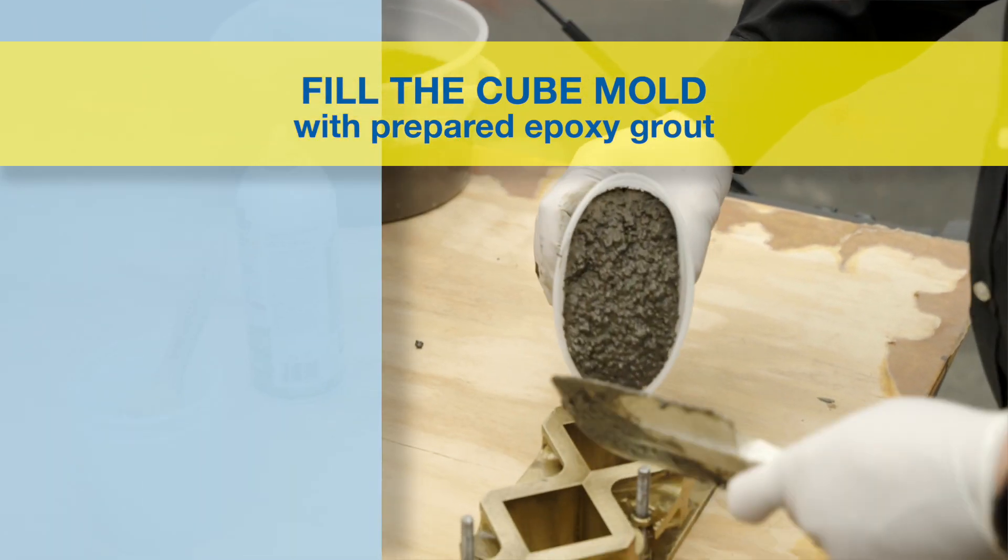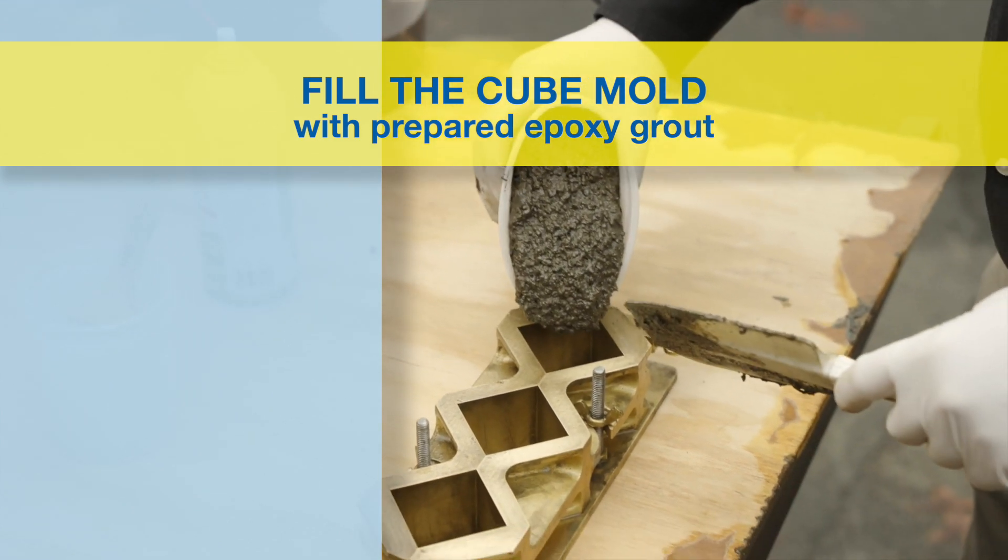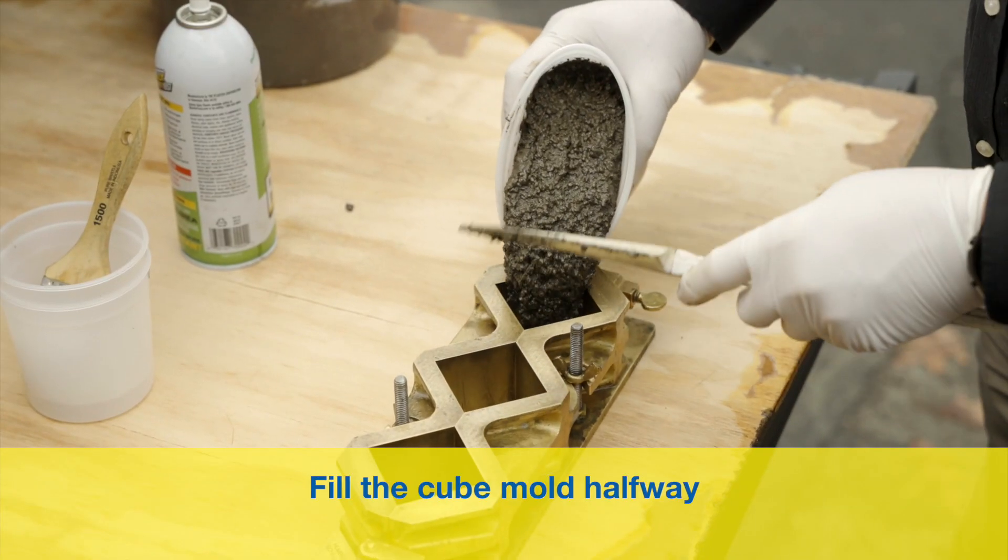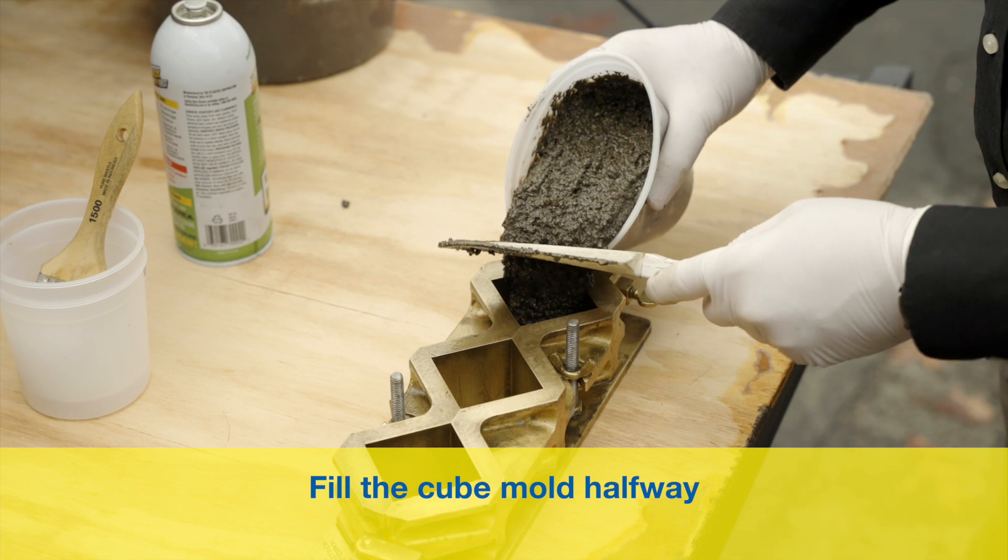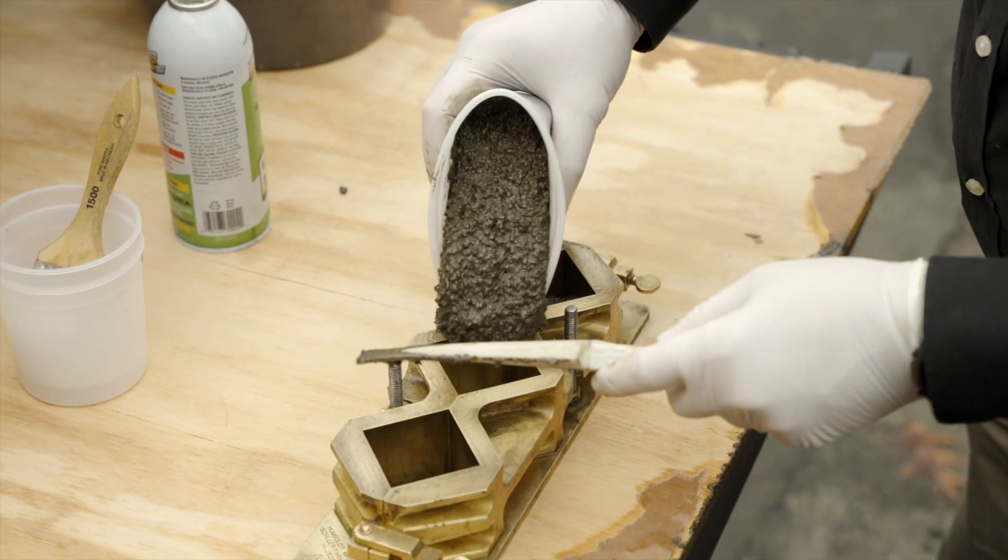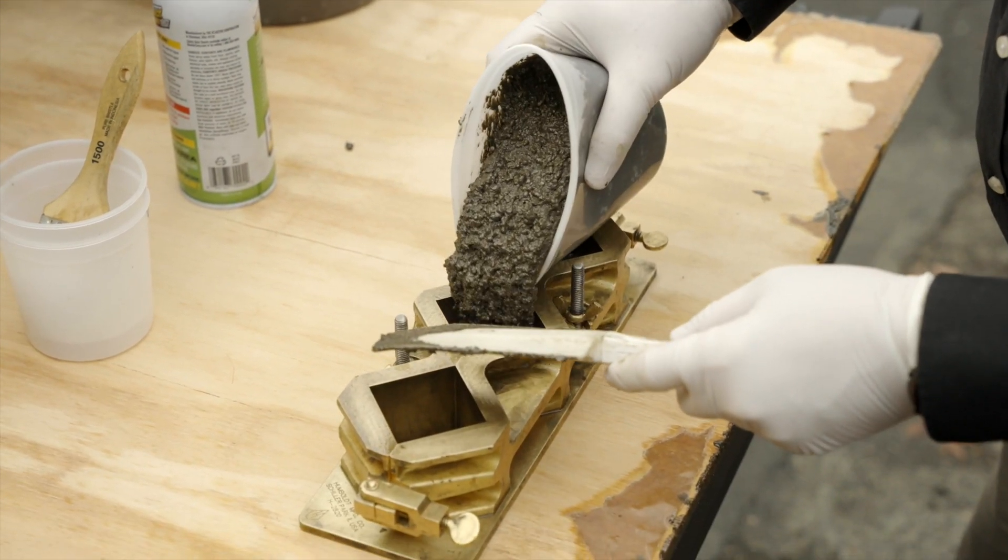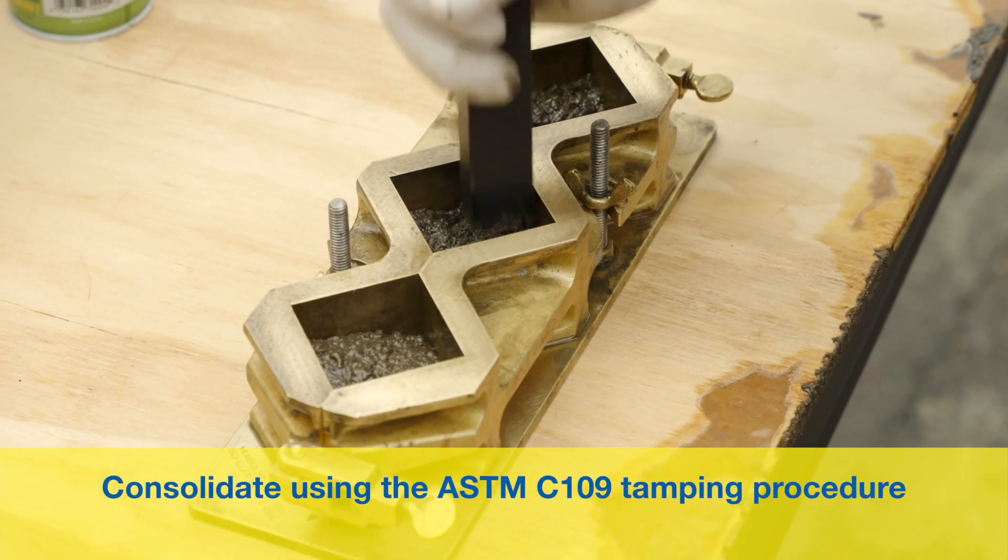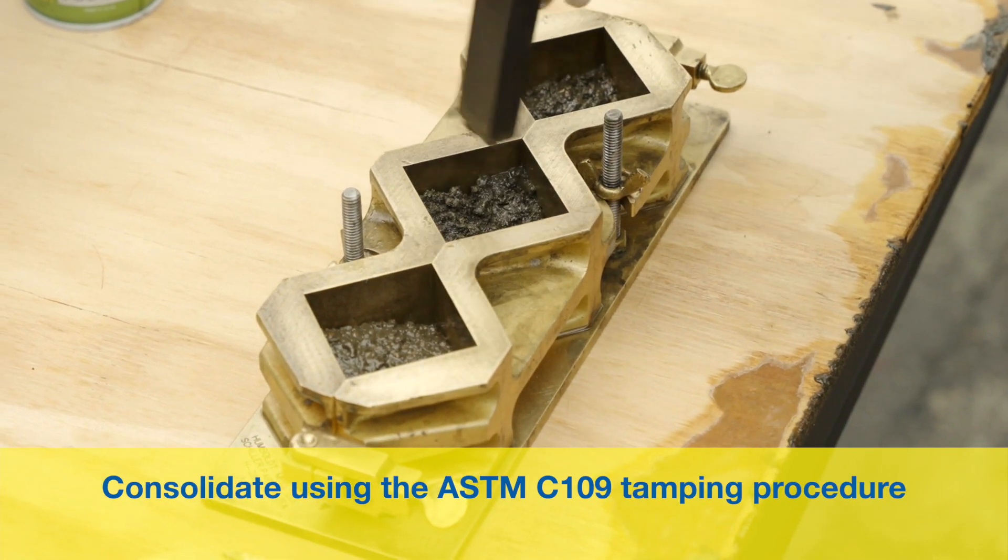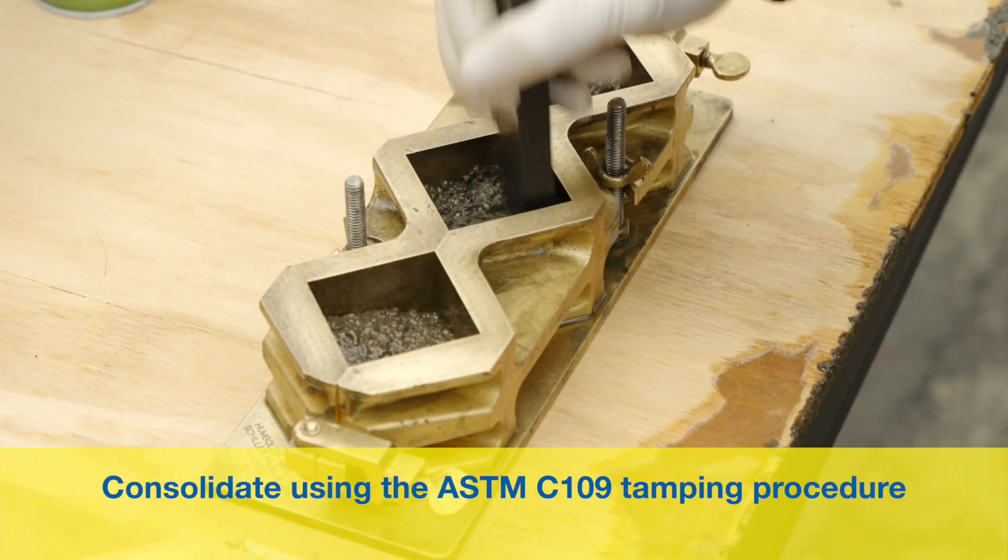With the cube mold and epoxy grout ready, carefully fill the cube mold halfway with epoxy grout. If you're following our Tech Bulletin 210, we are showing method 1 here. Consolidate the first layer of the epoxy cube specimens using the ASTM C109 tamping procedure.